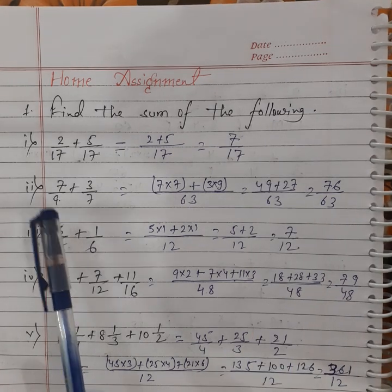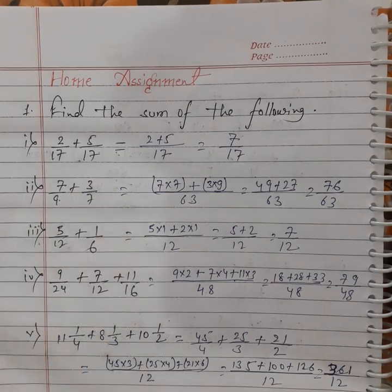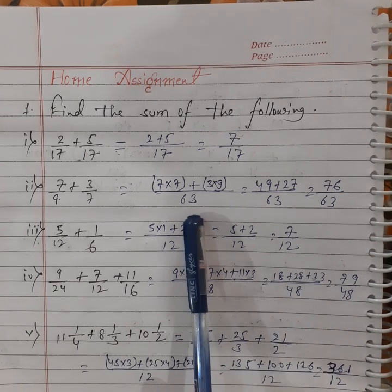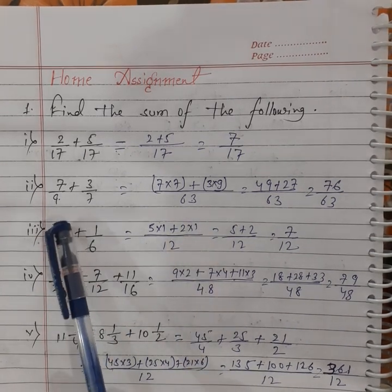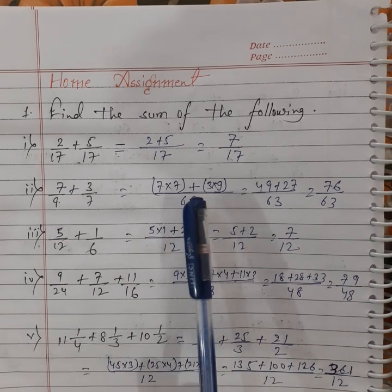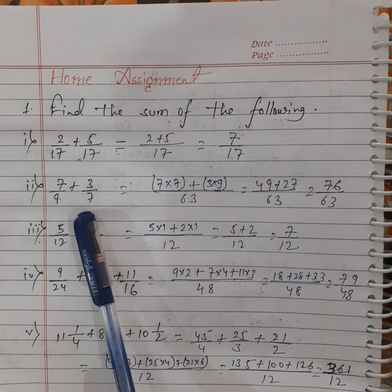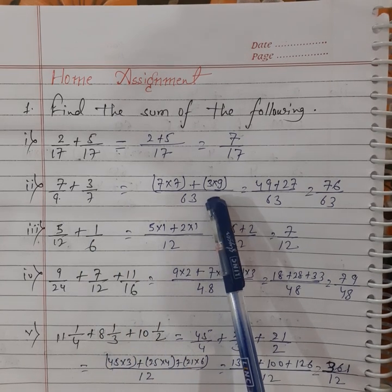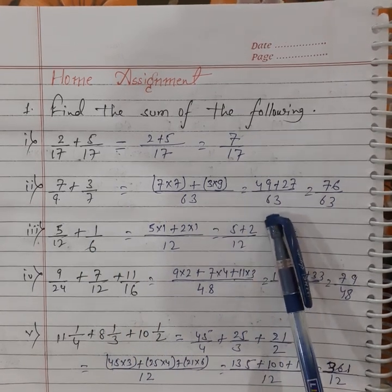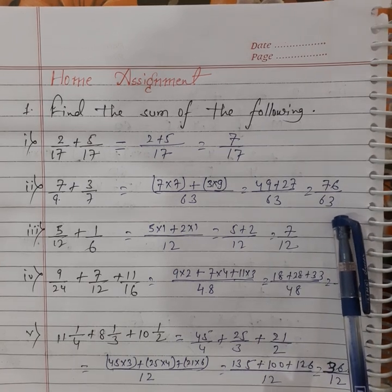Next question: 7 by 9 plus 3 by 7. We take LCM as 63. 63 divided by 9 gives 7; 7 multiplied with 7, plus 63 divided by 7 gives 9; 3 multiplied with 9. So 49 plus 27 over 63 gives the answer 76 by 63.